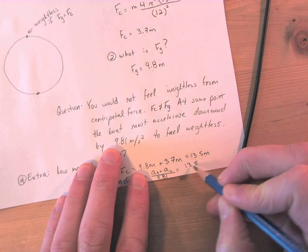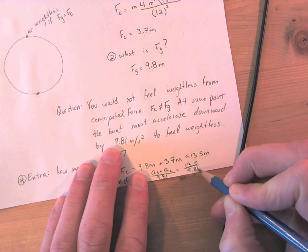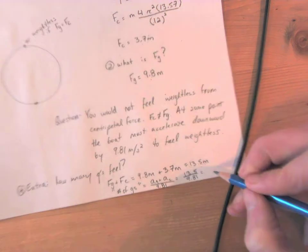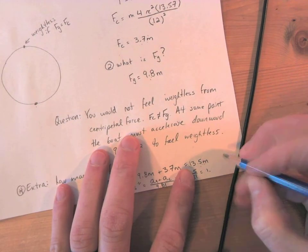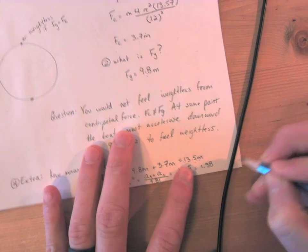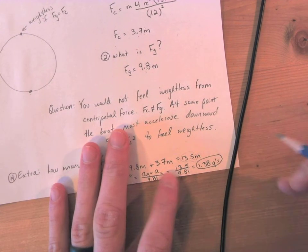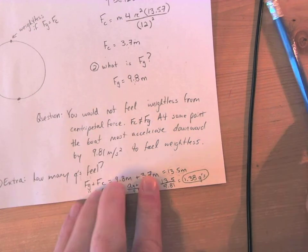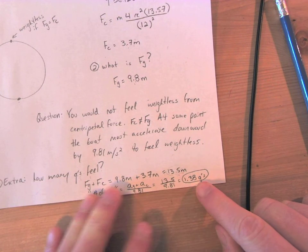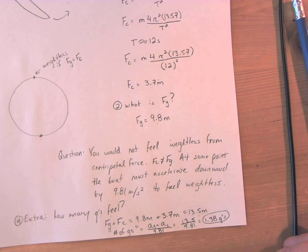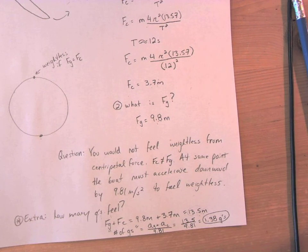And overall that'll give us 1.38, very roughly, g's. So at the bottom of this pirate ship ride you kind of feel 1.38 times the gravity acceleration or the force of gravity at the bottom.